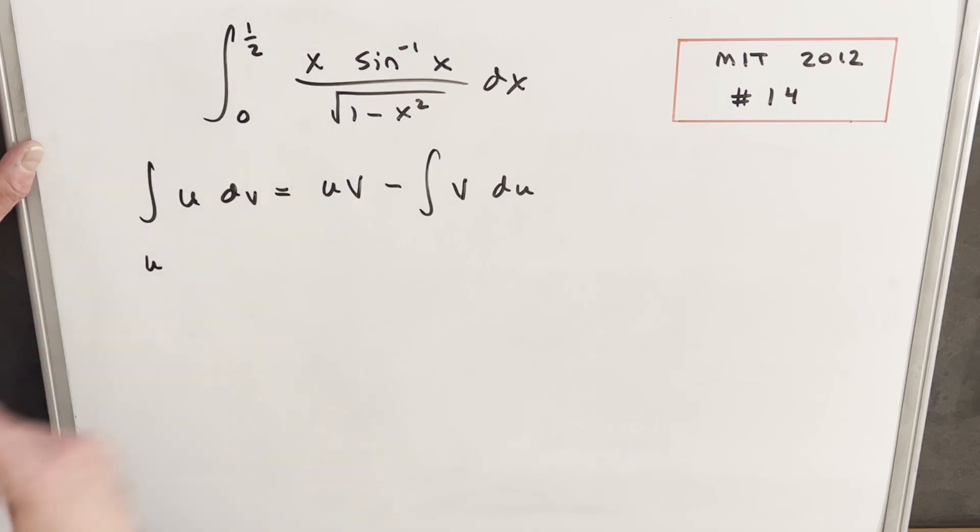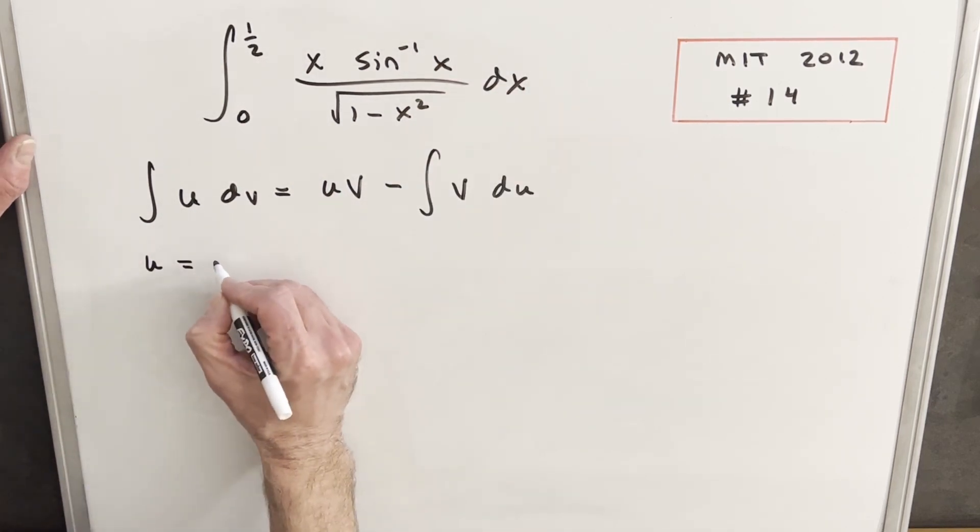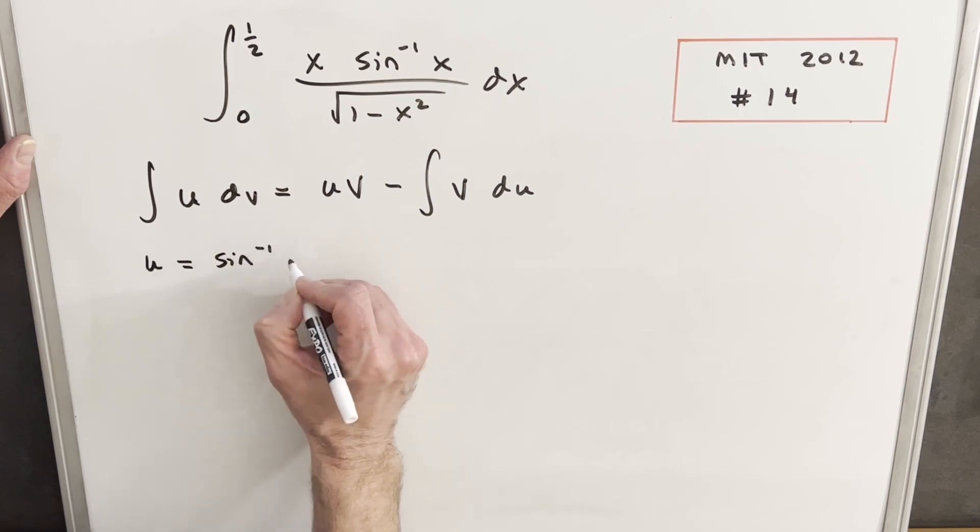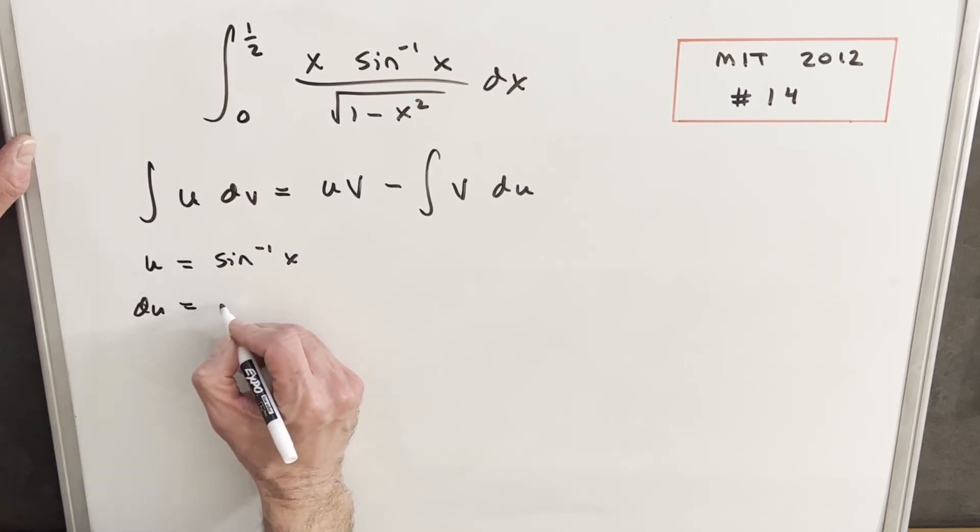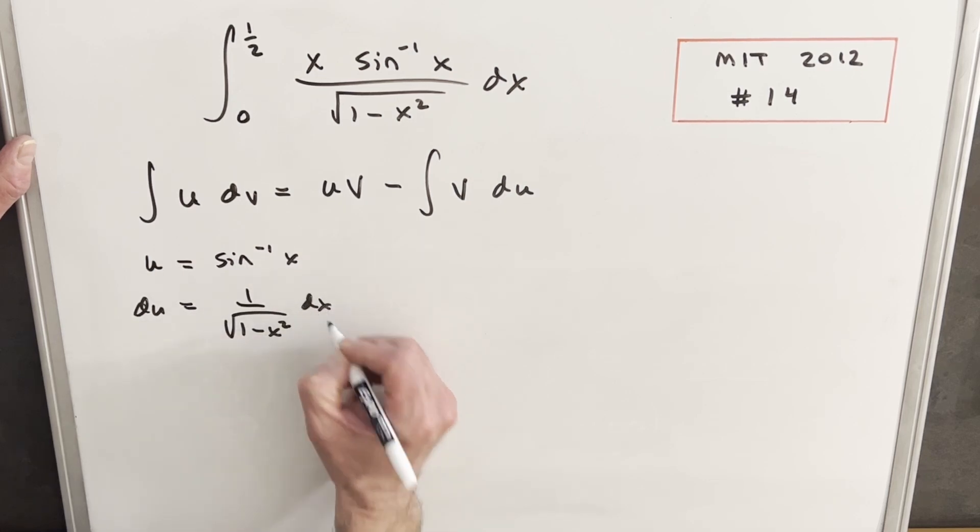For our u, on its own we don't really have a good way to integrate an arcsin, so we can use that as our u value. Then we can differentiate that, and the derivative is just 1 over square root of 1 minus x squared dx.